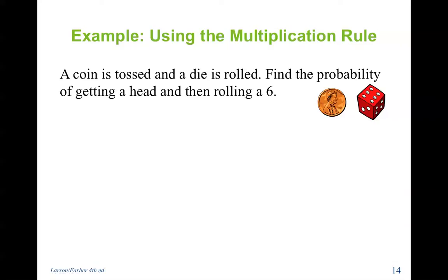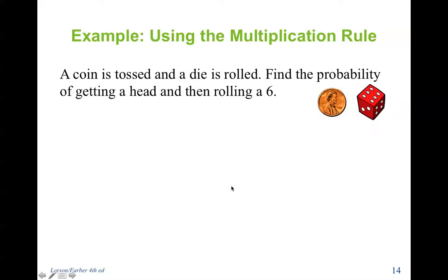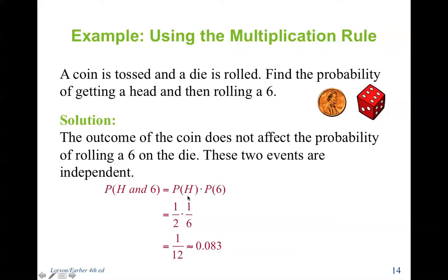A coin is tossed and a die is rolled. Find the probability of getting a head and then rolling a 6. These events are independent, so it is simply the probability of one times the probability of the other: one half times one sixth, which equals one out of 12.